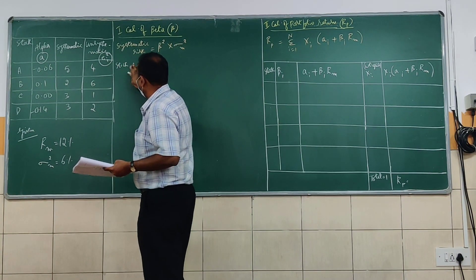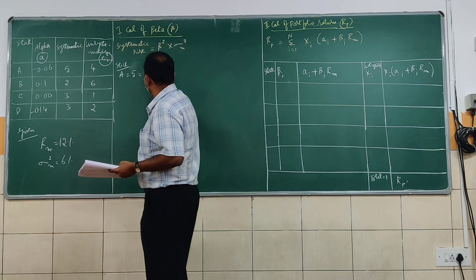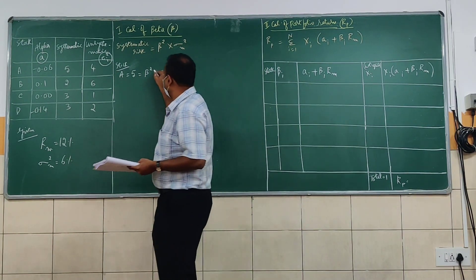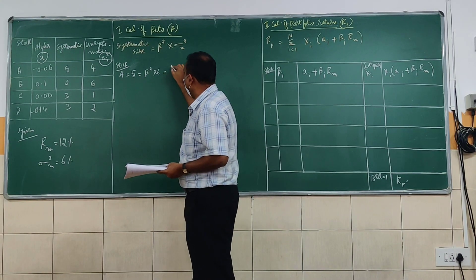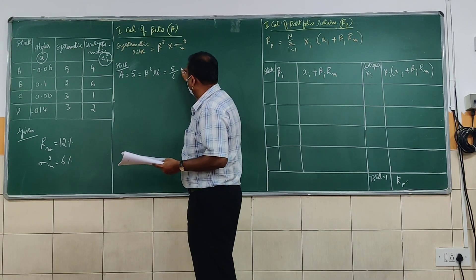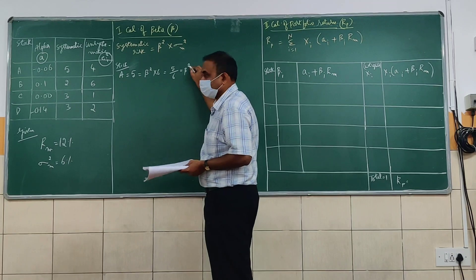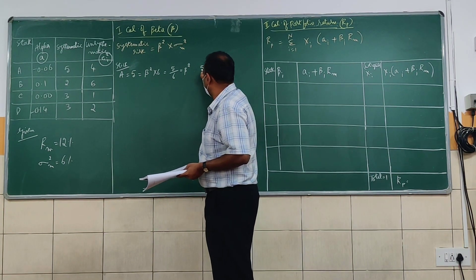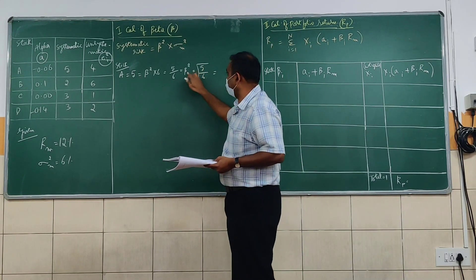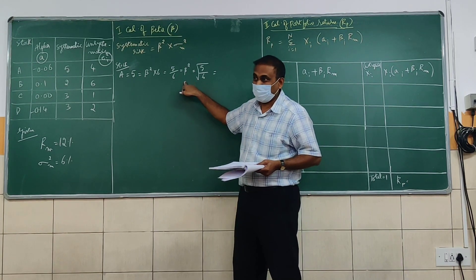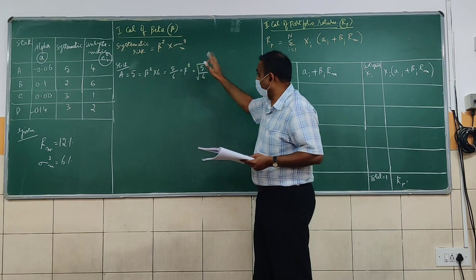For stock A: systematic risk is given as 5. Beta is unknown. So: 5 = β² × 6%. Simplifying to find beta: 5 divided by 6 equals beta squared. To cancel the square and get only the beta value, we take the square root of 5 by 6. Taking the square root gives us the beta value for stock A.